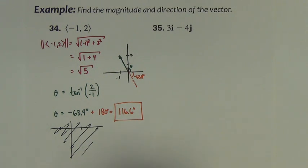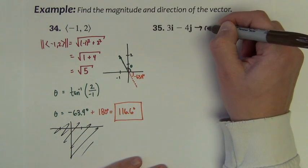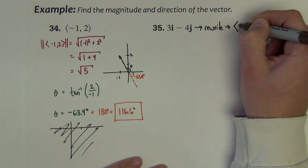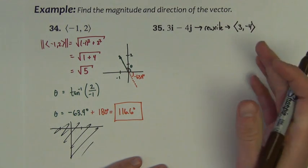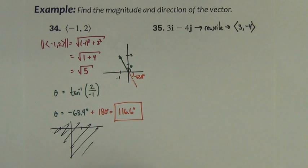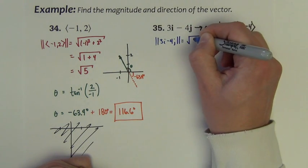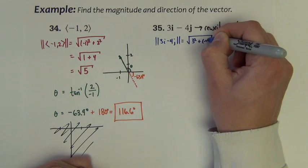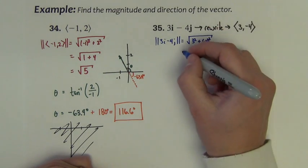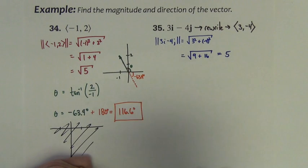Next example, we see our first example of a vector given in linear combinations form. If you don't like this form, just rewrite it to be (3, -4). It's the same numbers, 3 and -4. So all the same work is going to come out. So the magnitude of this vector, the magnitude of 3i minus 4j, is square root of 3² and (-4)². So we have to just drop the i's and j's. So this is 9 plus 16, which comes out to 5. We all recognize the 3, 4, 5 triangle.